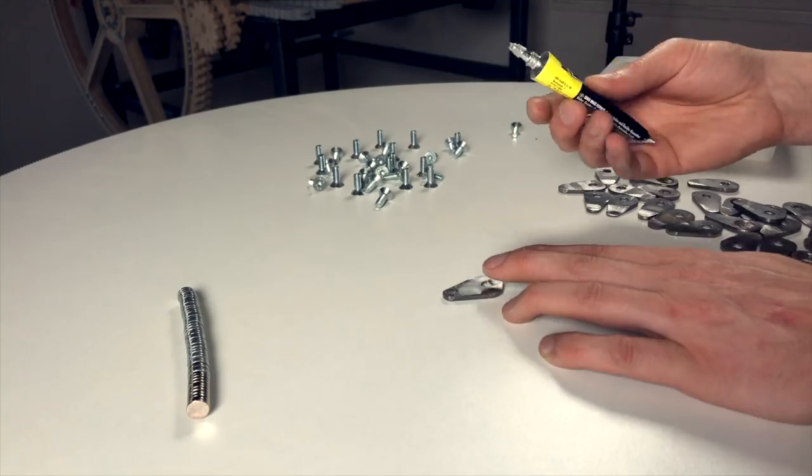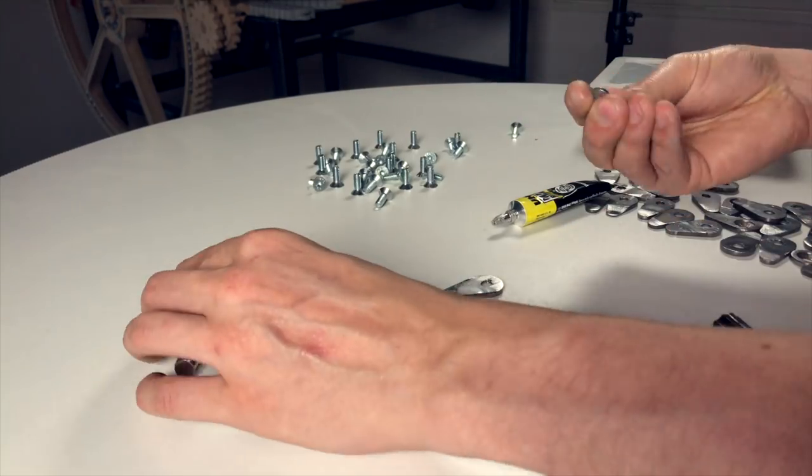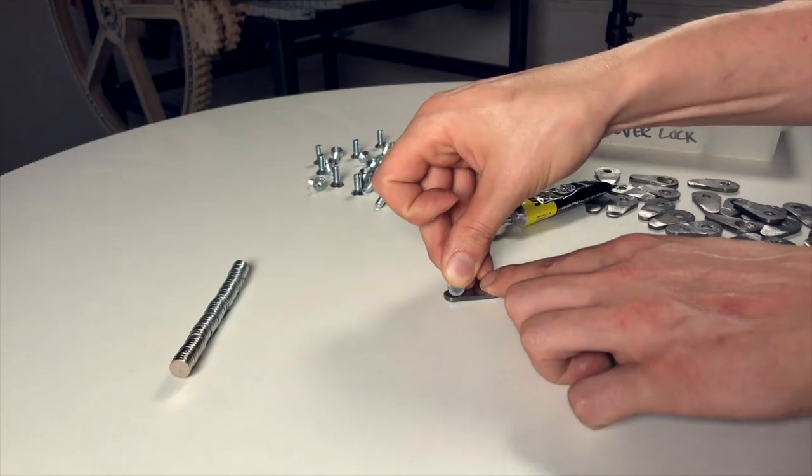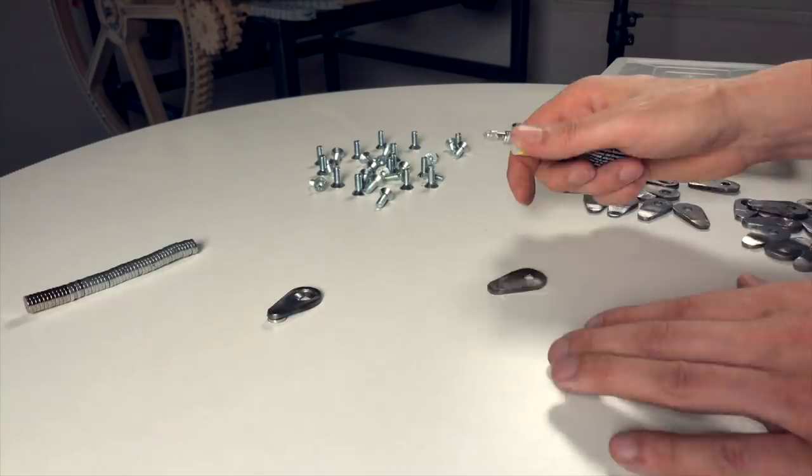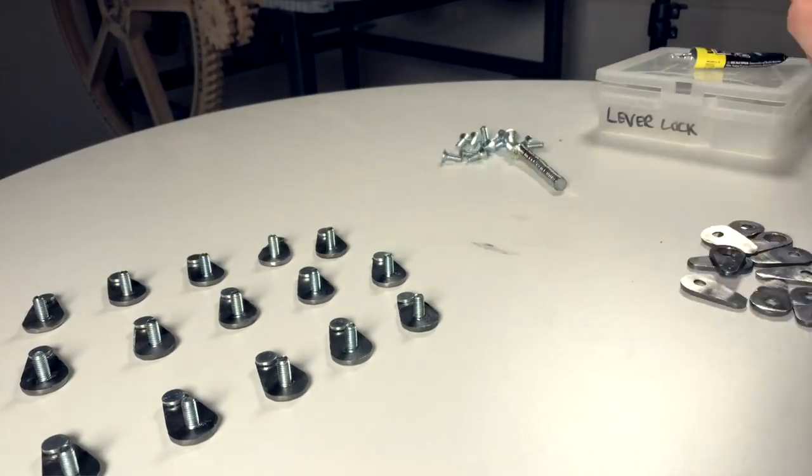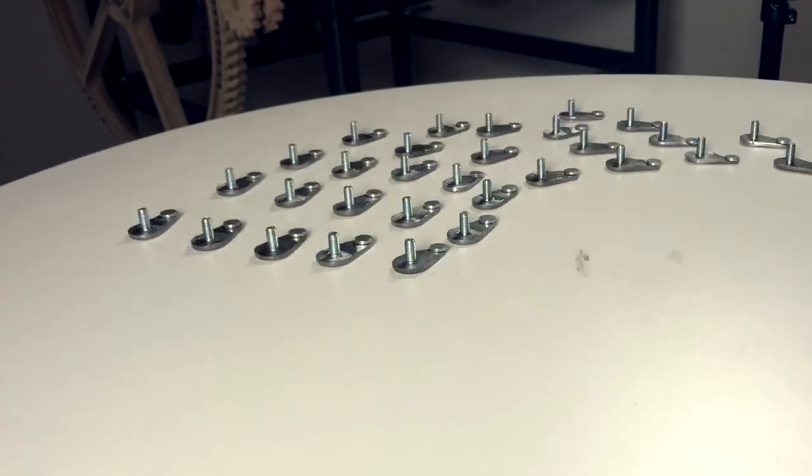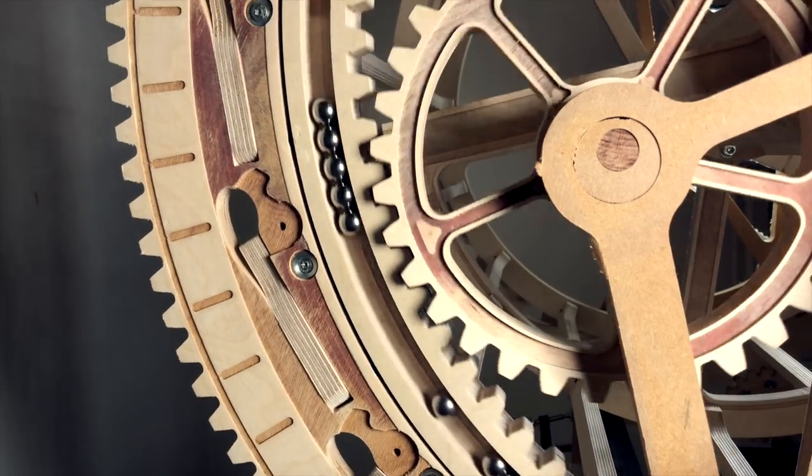Then I started gluing the magnets to the levers. And the nice thing with gluing magnets is that they're self-clamping, so you don't have to use clamps. They are clamping themselves to the surface thanks to their magnetic force, so that's a little luxury actually.